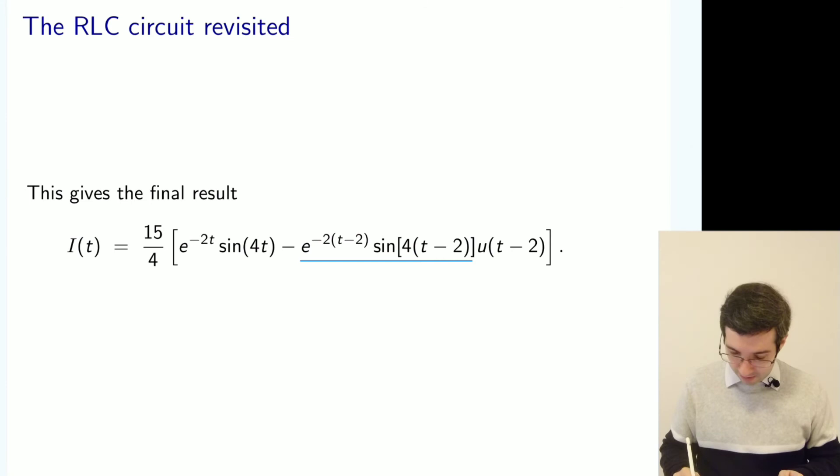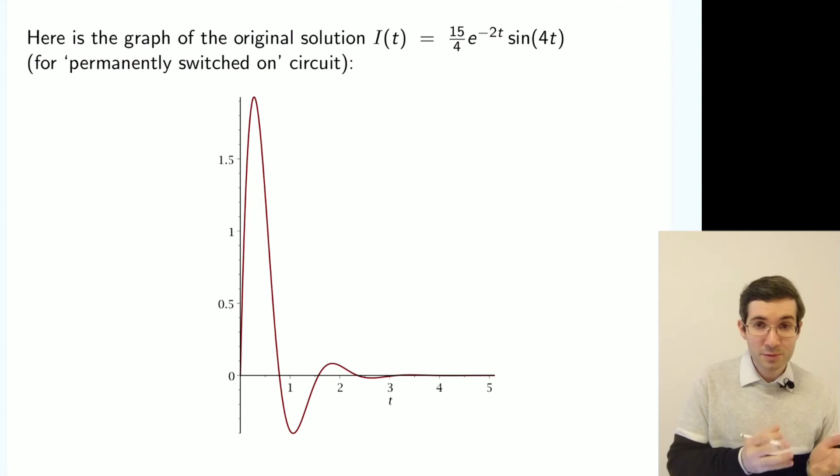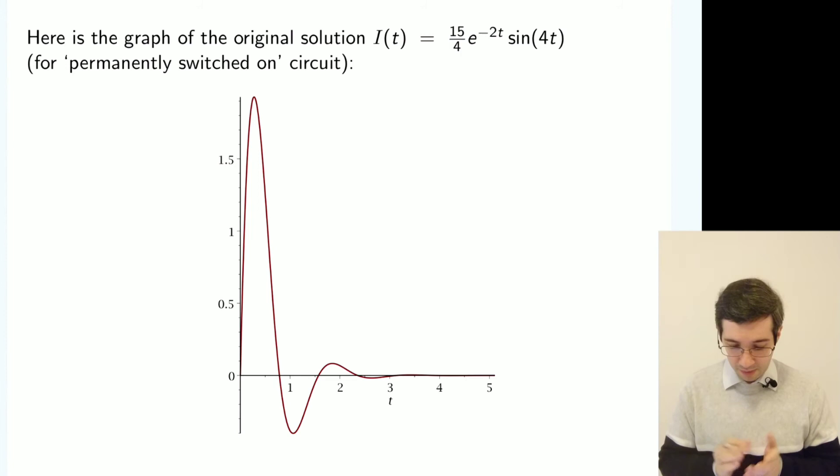And if we compare that to the previous case where we didn't switch off our voltage, then it just died out, the current. So there was an initial spike which died out.